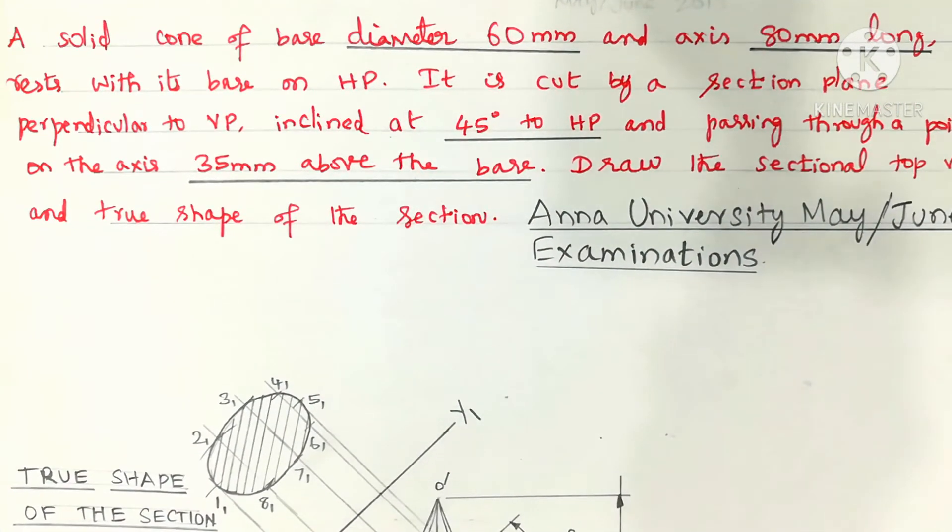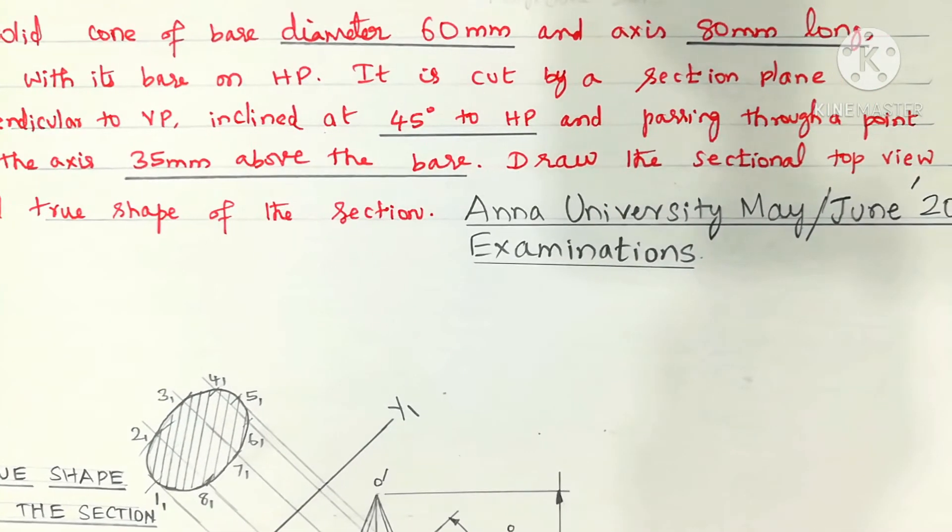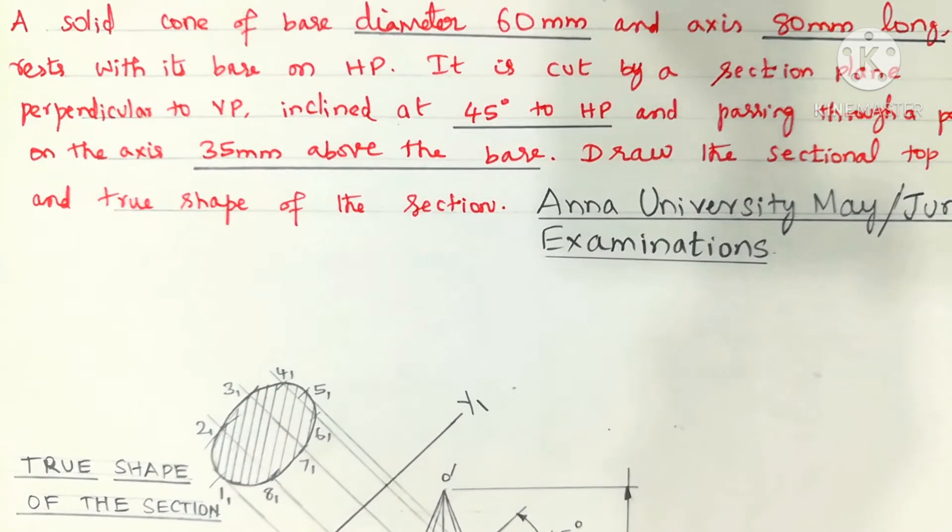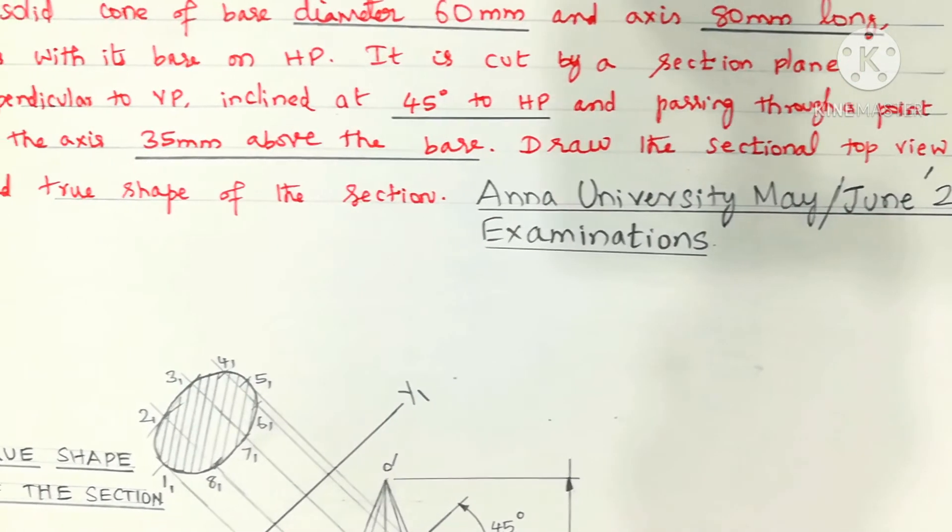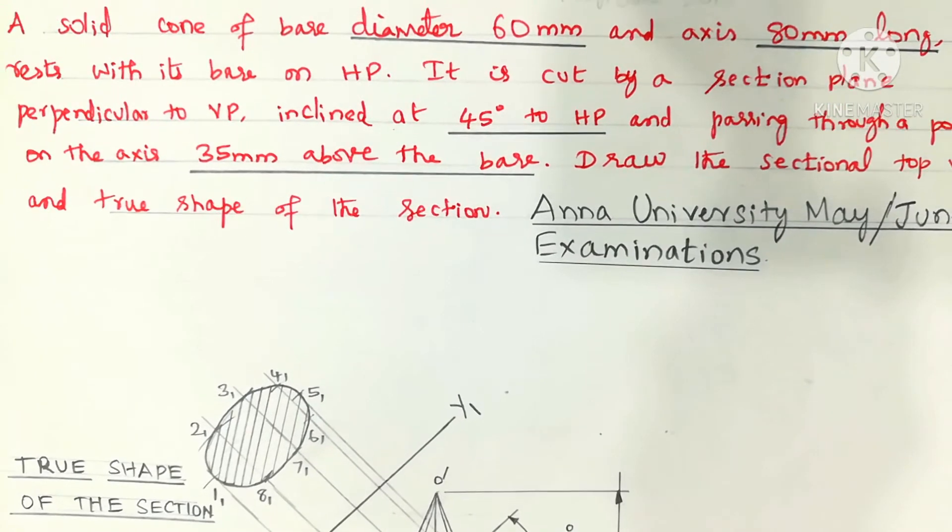A solid cone of base diameter 60 mm and axis 80 mm long rests with its base on HP. It is cut by a section plane perpendicular to the VB inclined at 45 degree to HP and passing through a point on the axis 35 mm above the base. Draw the sectional top view and the true shape of the section.